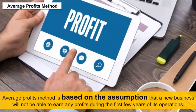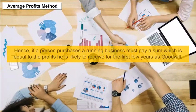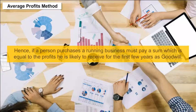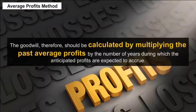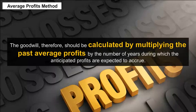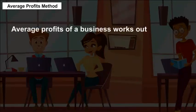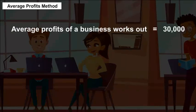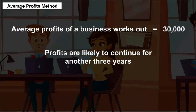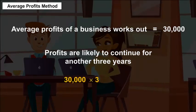Average Profits Method: This method is based on the assumption that a new business will not earn profits during its first few years. Hence, a person purchasing a running business must pay a sum equal to the profits likely to be received for the first few years as goodwill. Goodwill is calculated by multiplying the past average profits by the number of years during which the anticipated profits are expected to accrue. For example, if past average profits are Rs. 30,000 and expected to continue for 3 years, goodwill will be Rs. 90,000 (Rs. 30,000 × 3).